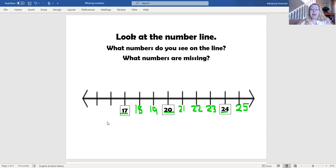That's it. But wait a second. There are two numbers before 17. How can I figure out those numbers?